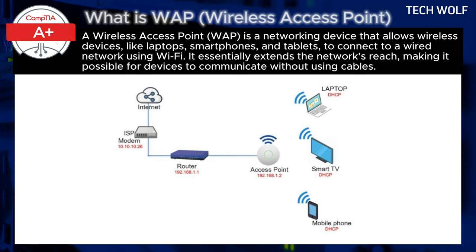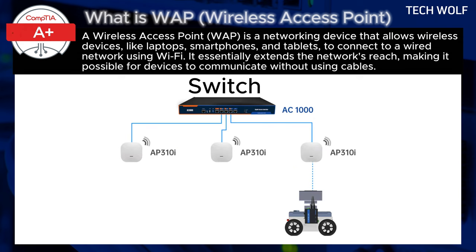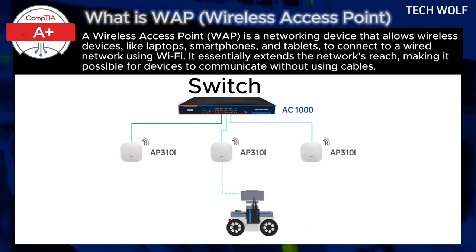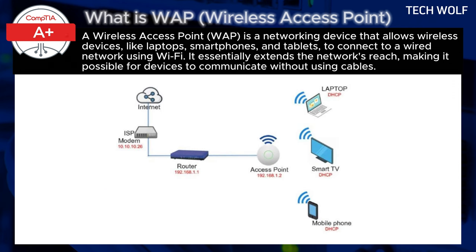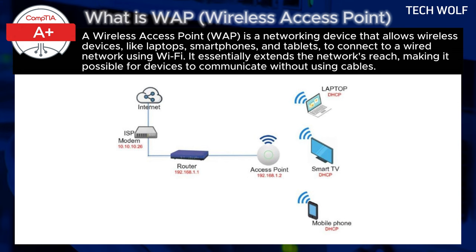Key components of WAP: The Wireless Access Point connects to the main network through a router or switch using a physical Ethernet cable. This gives the WAP access to the broader network, including the internet, servers, and other devices. The Wireless Access Point converts the wired network connection into a wireless signal that devices can connect to. Devices like smartphones and laptops communicate with the WAP over Wi-Fi, which then passes their data to the network through the wired connection.